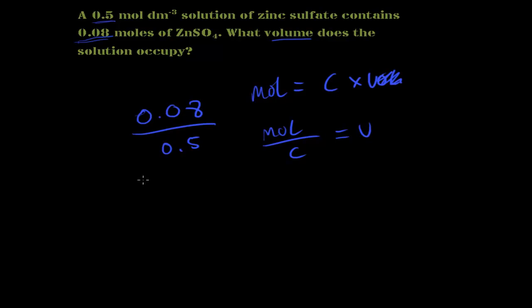Dividing 0.08 by 0.5 is basically the same as multiplying by 2, giving 0.16. The units of volume are dm³, so the answer is 0.16 dm³. Those are the three questions — I hope you now have a good idea of how to work out concentration, volume, or number of moles from any given set of values.